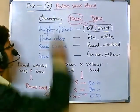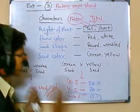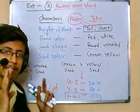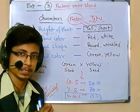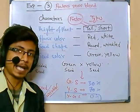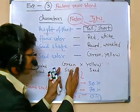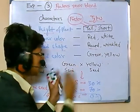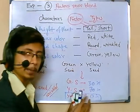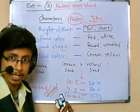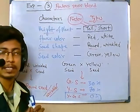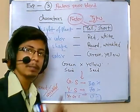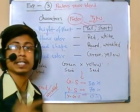In the previous experiment — Experiment 3 by Gregor Johan Mendel — we proved that those factors, whatever version of the factor is present, never get blended. For example, if you cross a plant with green seeds with a plant with yellow seeds, you either get all green seed plants or all yellow seed plants, but never a yellow-green seed plant.